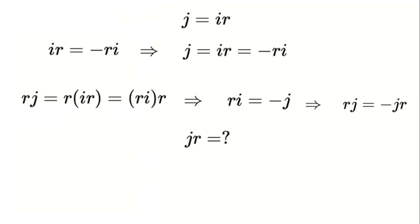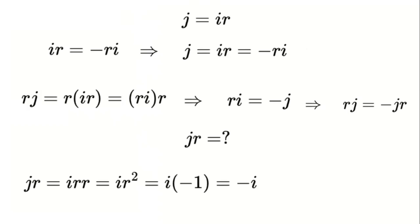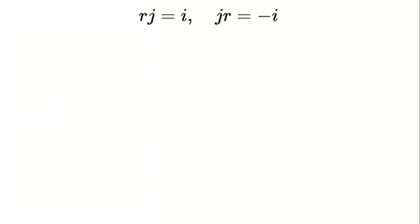But what is j times r? Well, j is i times r, so j times r becomes i times r times r. That's i times r squared, and r squared is negative 1. So we get i times negative 1, or just negative i. So j times r equals negative i, which means r times j equals positive i. Now we have a problem: our number n only had r and j in it, but now we're seeing i popping up in multiplication. That means our system isn't closed — we need to include i too.